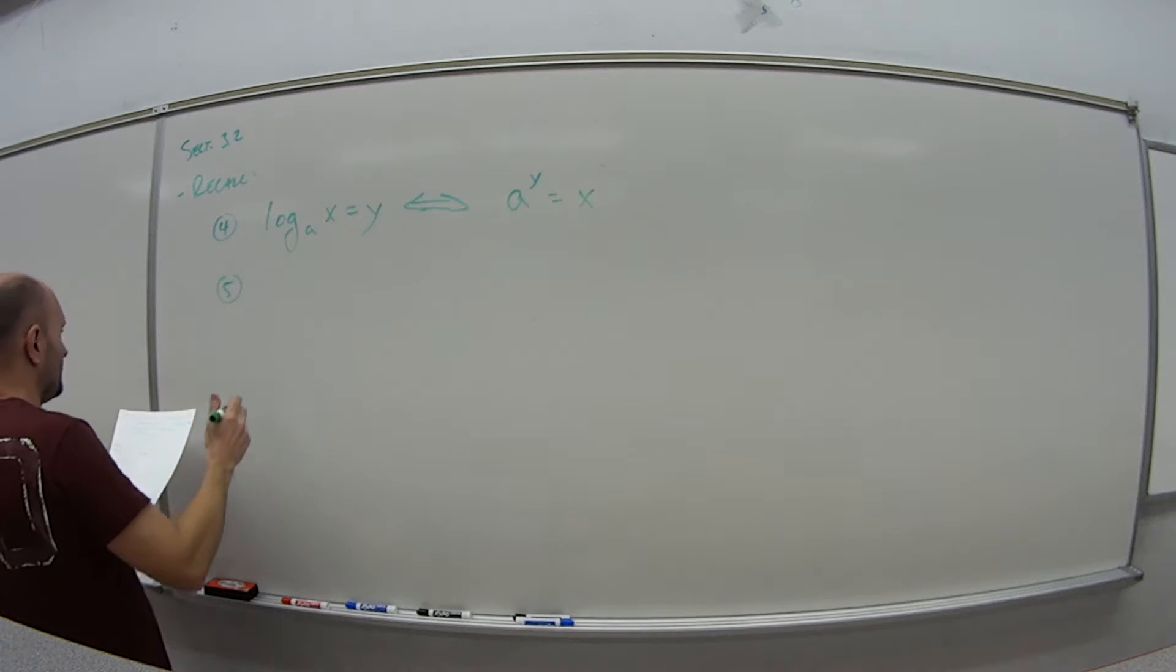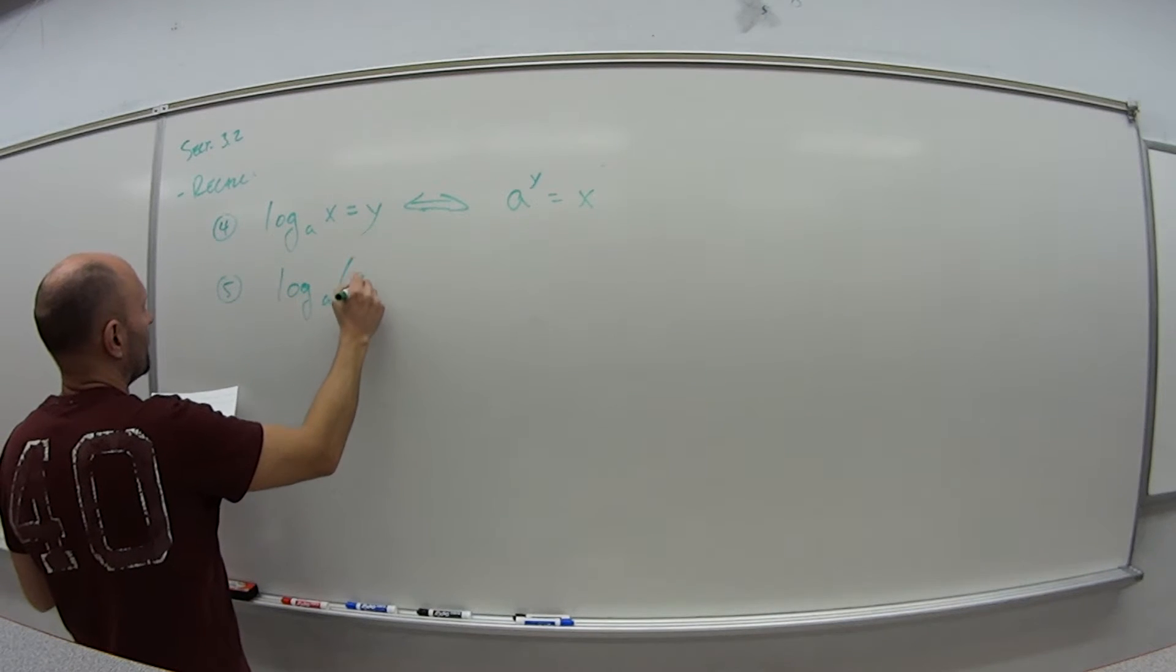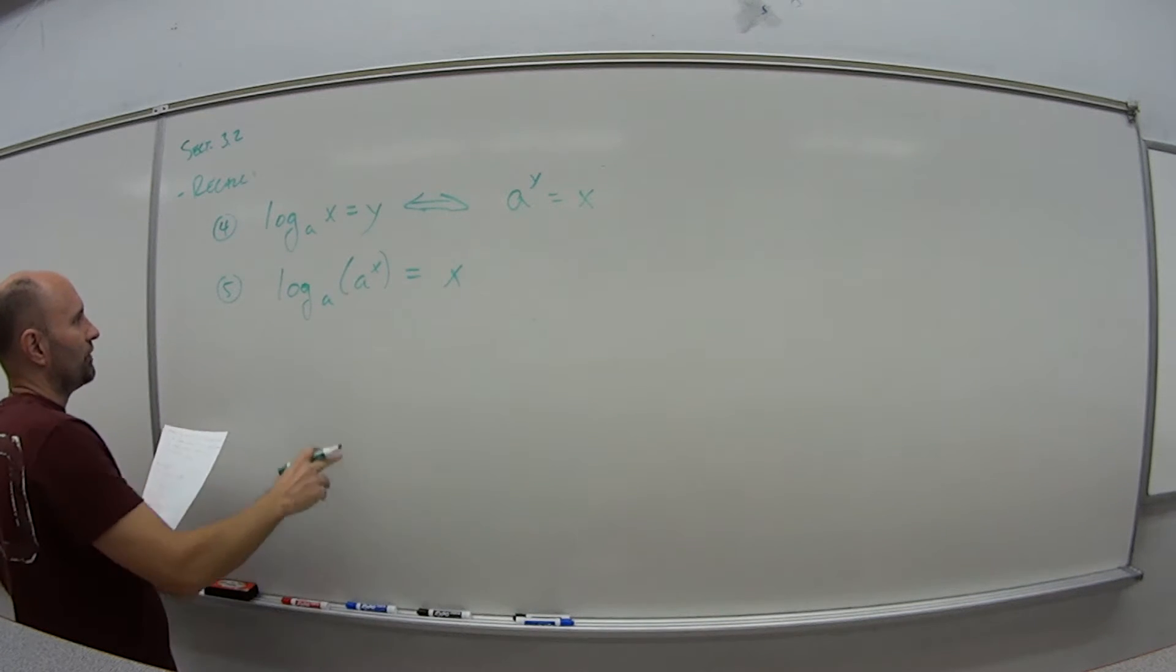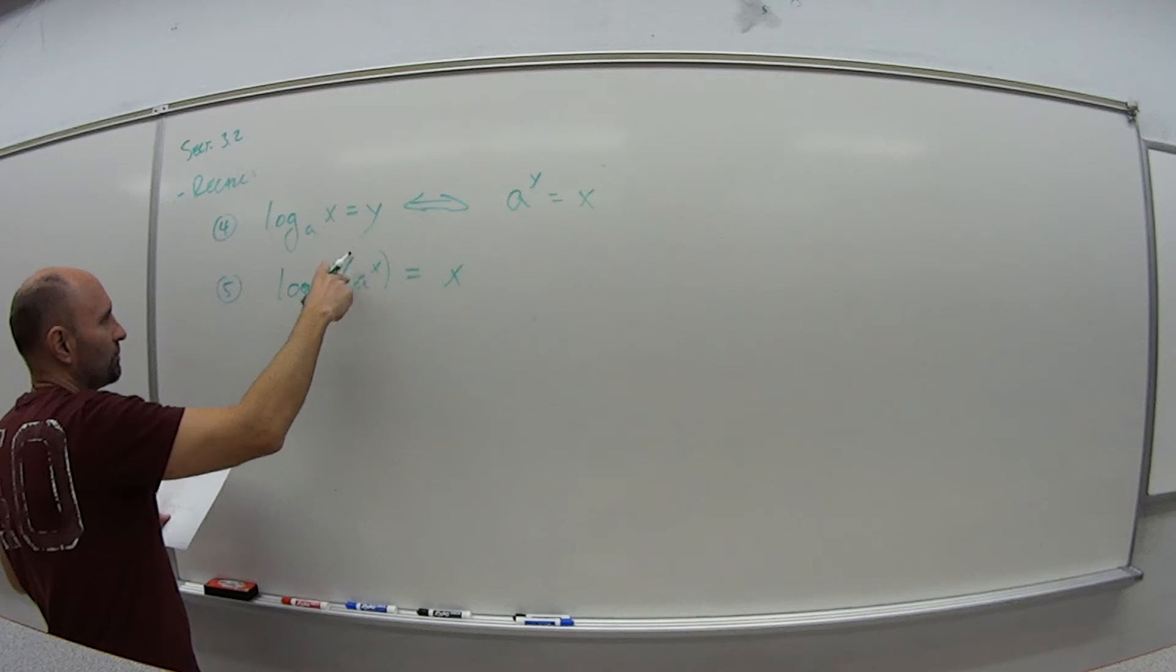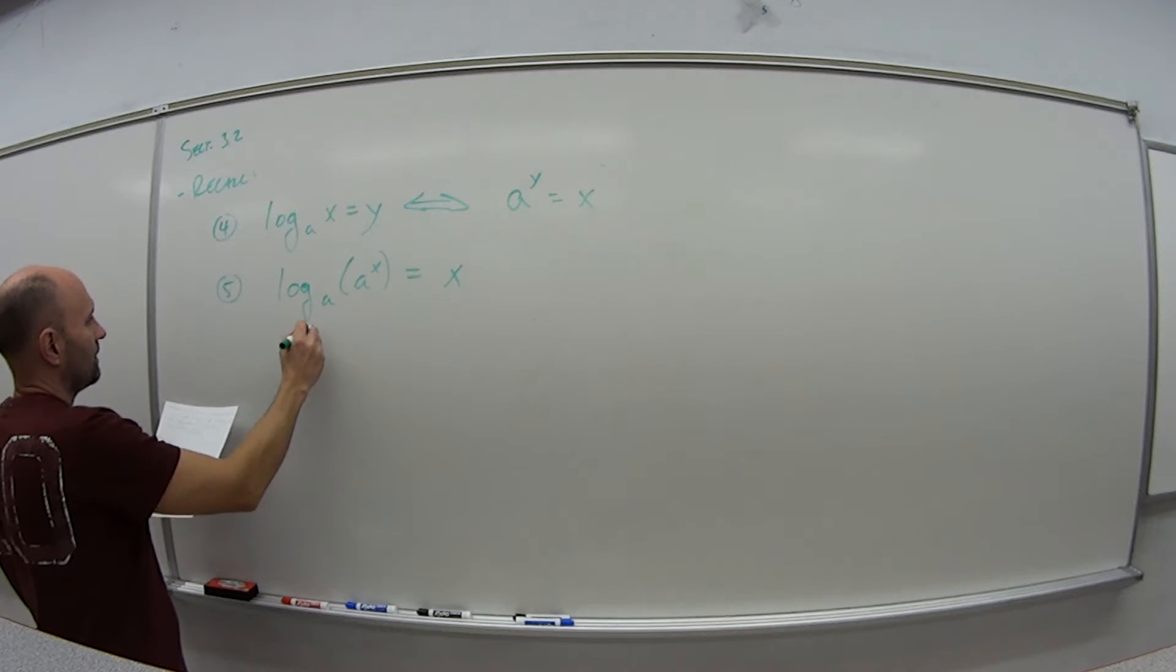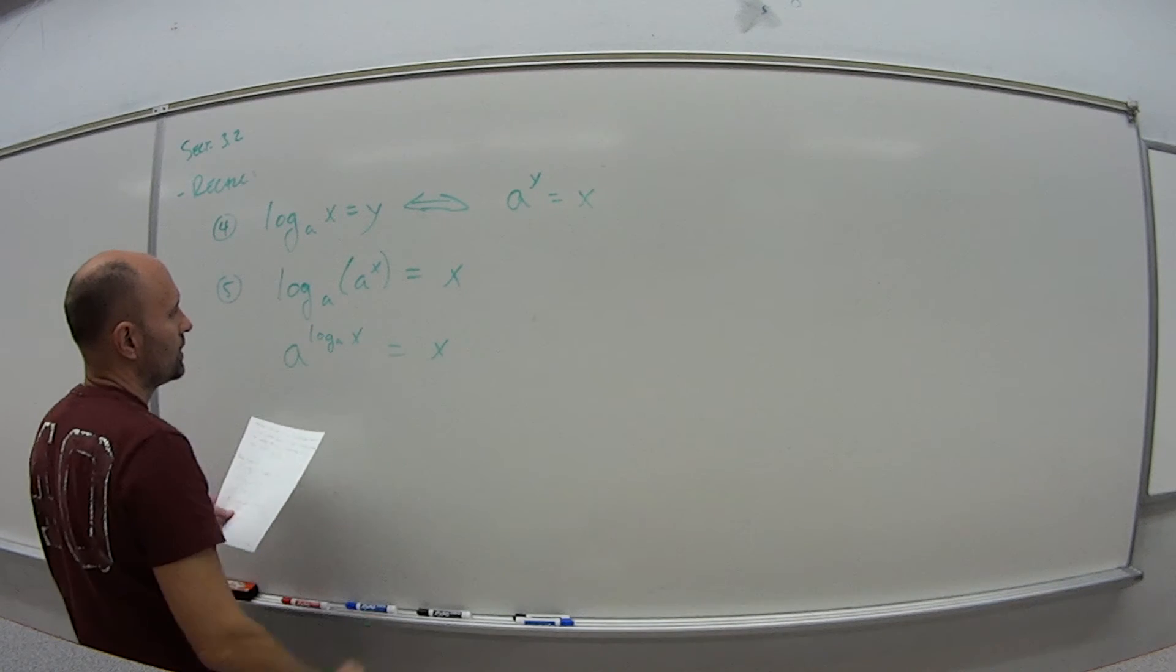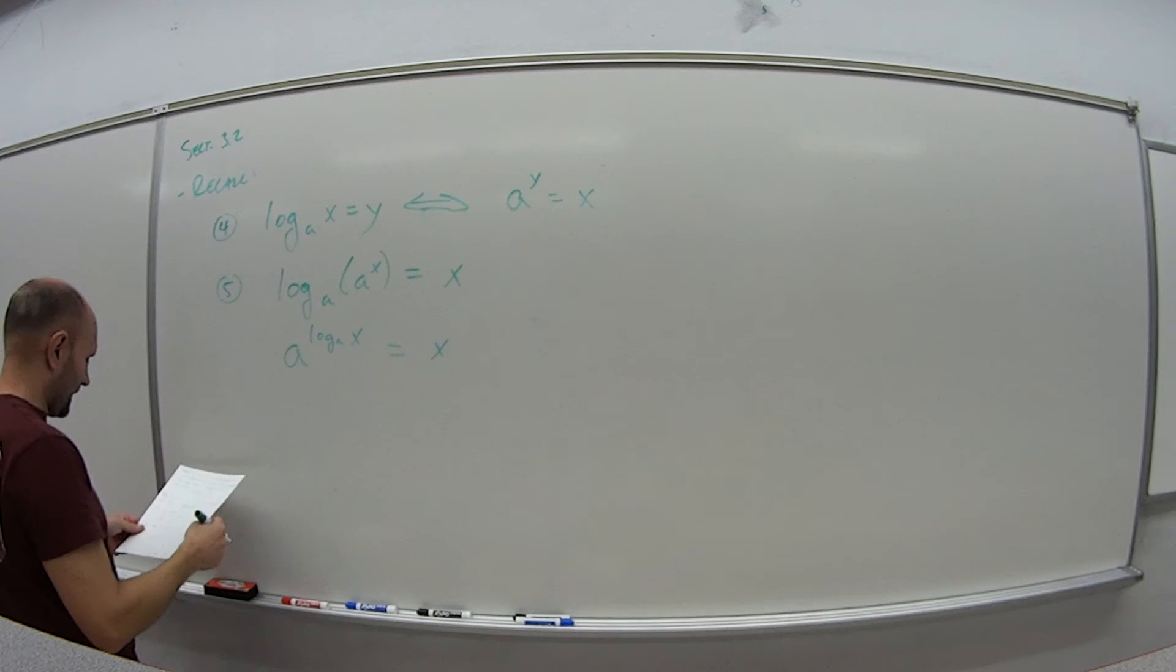Number 5: if I have log base A of A to the X, this is just equal to the value of X. If the base of this log function is the same as the base of this exponent piece, my answer is just whatever the exponent is. Similarly, if I have A to the log base A of X, this is also just equal to X. So depending how it's written, or if we manipulate it, we can get it to look like this. It's simply just X.